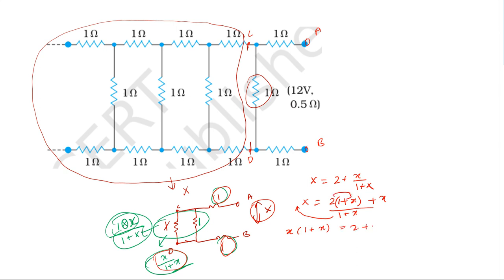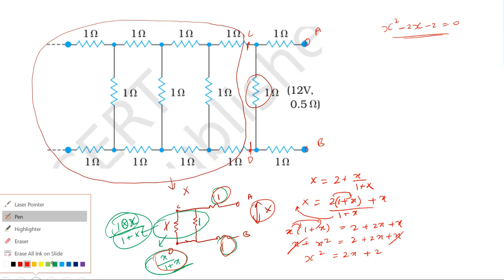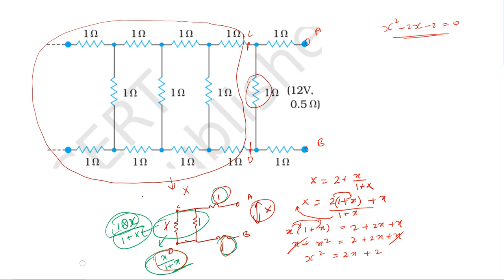Expanding: X plus X squared equals 2 plus 2X plus X. Simplifying: X squared equals 2X plus 2, so X squared minus 2X minus 2 equals zero. Solving the quadratic equation using the quadratic formula: X equals minus b plus or minus root of b squared minus 4ac, divided by 2a. That gives X equals 2 plus or minus root of 4 plus 8, divided by 2.